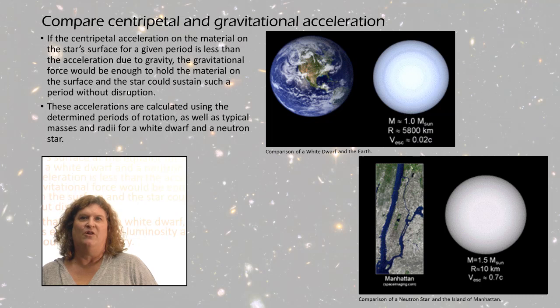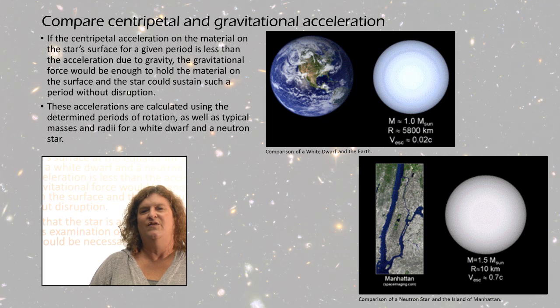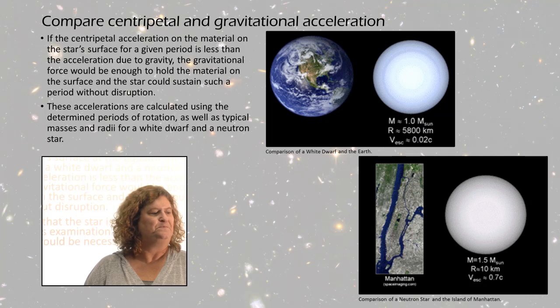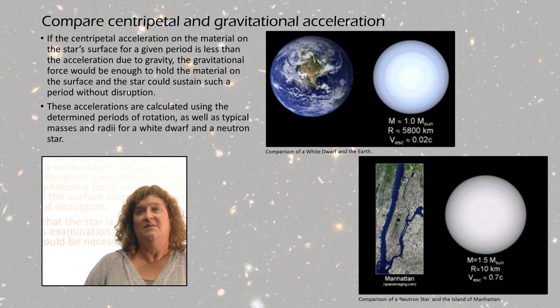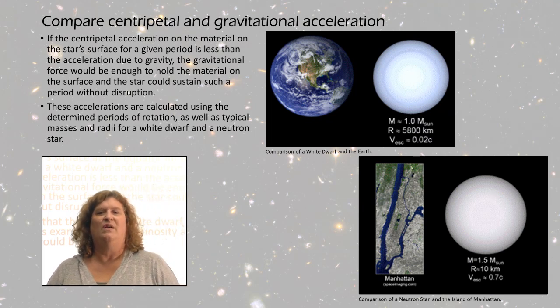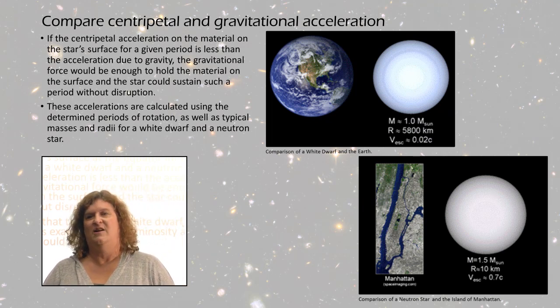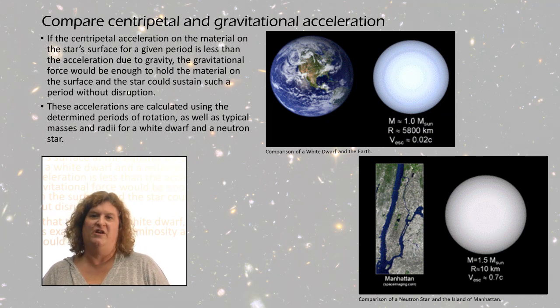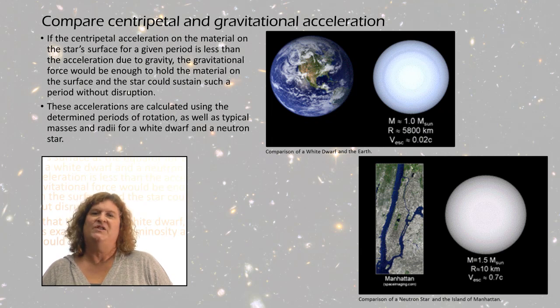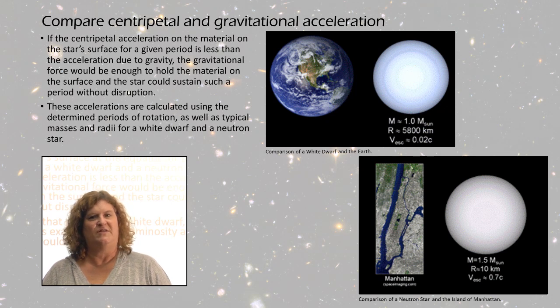A white dwarf has a mass of about the same as the sun and a radius of 5800 kilometers, shown in the image next to Earth. The neutron star has a mass about one and a half times the sun but is only 10 kilometers in diameter, shown next to Manhattan. You can use Newton's universal law of gravitation to determine the acceleration due to gravity on the surface of each.